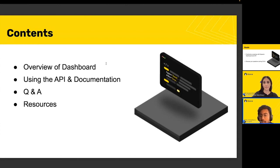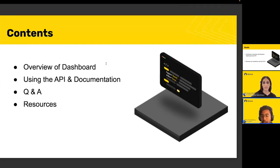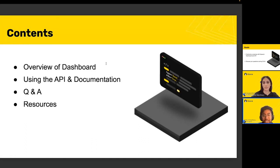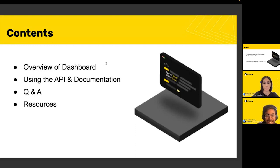The content today: first we'll go over the dashboard and its various parts, where to find API keys, etc. Then we'll go into the API and how to use the documentation. We'll build an intuition for how things you do via the API affect the dashboard — so you can track how your algorithms are working and affecting your account. Then we'll do Q&A and finish with some resources.